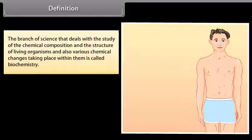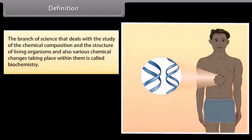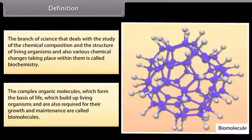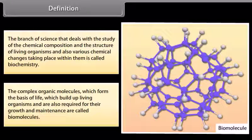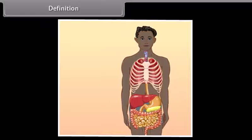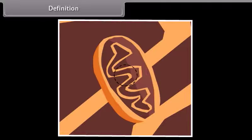Definition. The branch of science that deals with the study of the chemical composition and the structure of living organisms and also various chemical changes taking place within them is called biochemistry. The complex organic molecules which form the basis of life, which build up living organisms and are also required for their growth and maintenance, are called biomolecules. Biomolecules are related to living organisms in the sequence: living organism, organs, tissues, cells, organelles and biomolecules.